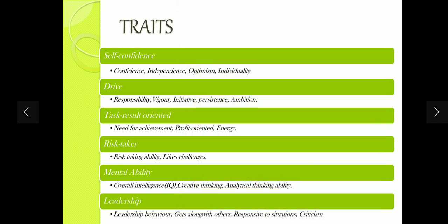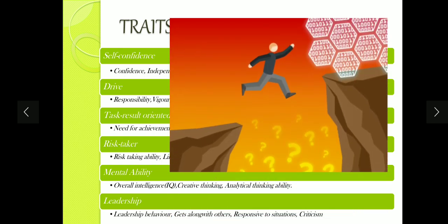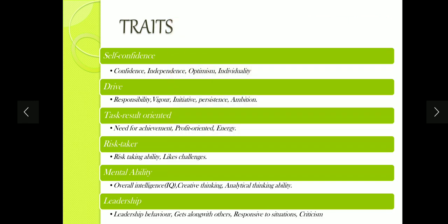The fourth quality is risk taker — these people have the ability to take risk, take chances, and like challenges. They go through hardships to achieve what they want because they believe no risk means no returns. The fifth quality is mental ability — a person should have some level of IQ and analytical thinking, meaning the ability to think through complex situations. Some level of mental ability is definitely required to become an entrepreneur.